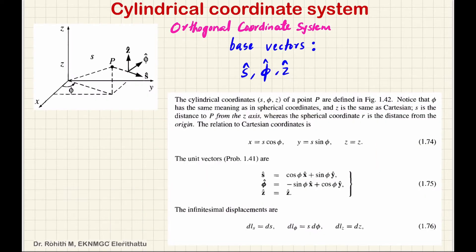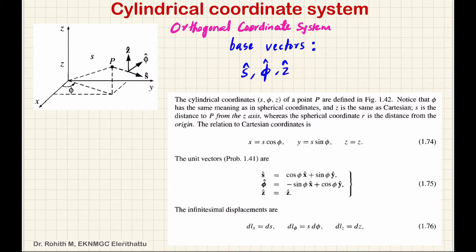In the previous video, we discussed the Cartesian coordinate system and spherical coordinate system. Now, in the cylindrical coordinate system, there are three basis vectors. These basis vectors are three unit vectors.